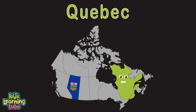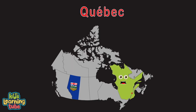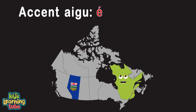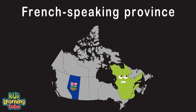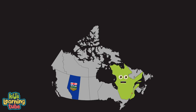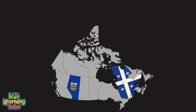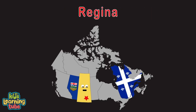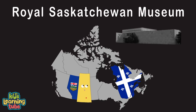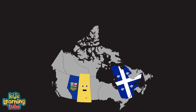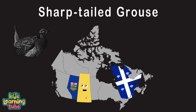I'm Quebec — my capital is also Quebec. I'm a French-speaking province and the largest province by area in Canada. I am Saskatchewan — my capital is Regina. The Royal Saskatchewan Museum is a great site. I became a province of Canada in 1905 and my provincial bird is a sharp-tailed grouse.